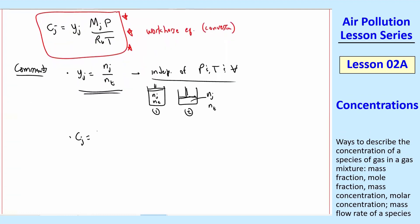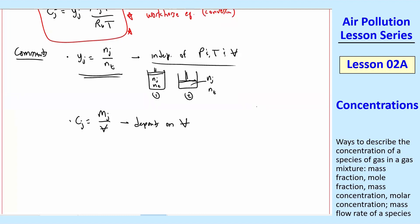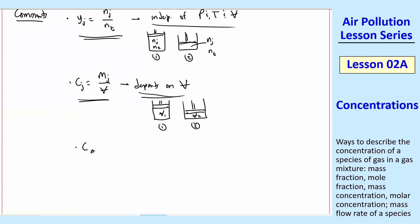How about cj? Well, cj equals mj over V, and this depends on volume. Using the same thought experiment: if you compress a tank with no leaks, you have the same mj but a different (smaller) volume. So cj would get bigger — it does depend on volume. Similarly, C_molar_j equals nj over V, and you can make exactly the same argument; this also depends on volume.